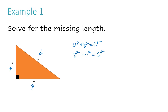Now I'm going to solve for the two numbers on the left side of the equal sign. 3 squared equals 9, 4 squared equals 16, and C squared is brought down. 9 plus 16 equals 25, and that equals C squared.